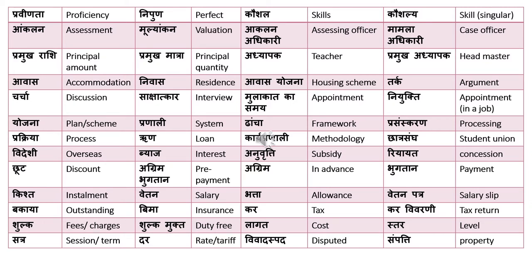'Avas' means accommodation and can also be translated as housing, like in a housing scheme — 'Avas Yojana'. For example: 'Is your accommodation provided in Sydney?' — 'Kya aapko Sydney mein Avas pradhan kiya gaya hai?' Note the difference: 'Avas' is accommodation or housing, whereas 'Nivaas' is residence. For example: 'My residence is on Harris Street' — 'Mein Harris Street par Nivaas karta hun.'